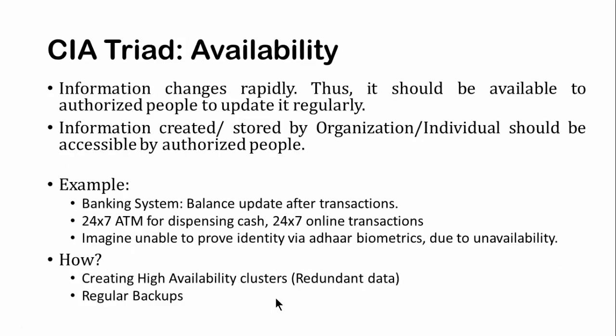Availability means data should be readily available whenever needed by the authorized person. This is important because information keeps changing rapidly - you do a transaction in the bank, your balance changes, and the authorized person or system should make the necessary changes immediately. Availability is very important: if you deposit money and it never gets updated in the system, you lose that money. Unavailability of services can cause huge damages, and therefore we must have systems in place to make resources available 24/7.